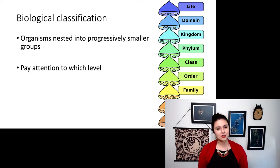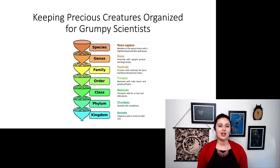It is important when you're using this classification, make sure you know what level you're talking about. You don't want to compare a species with an entire class. Those are two very different levels of organization. If it helps, here's my favorite mnemonic to help remember the order of these: keeping precious creatures organized for grumpy scientists. So we start with kingdom is the largest one here. This one happens to omit domain, then phylum, class, order, family, genus, and species.